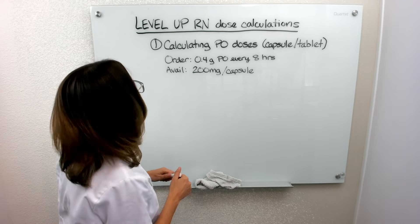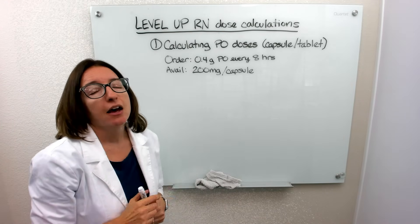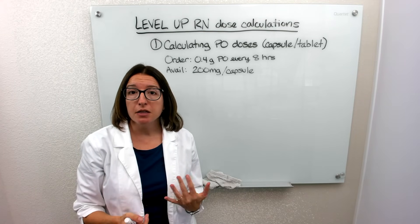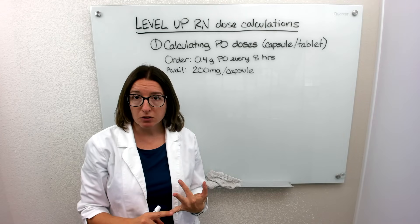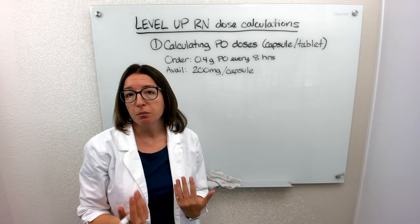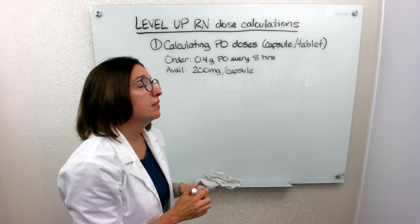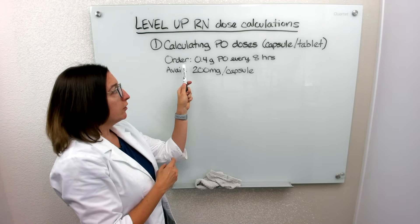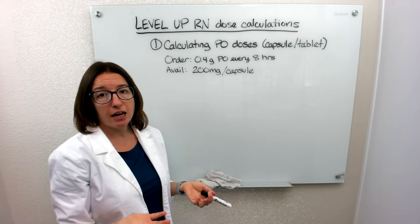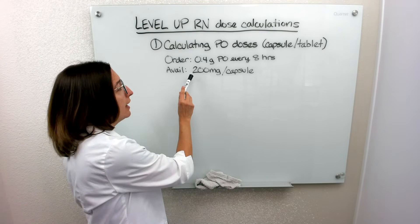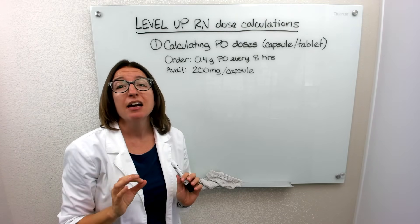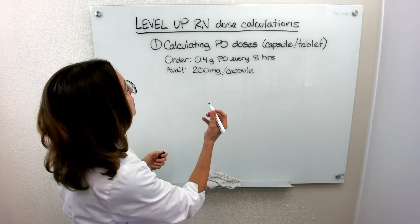The first problem I'm going to go over is how to calculate an oral dose. If your doctor prescribes a tablet or a capsule, how do you calculate how many tablets or capsules your patient should get? In this particular problem, the order was for 0.4 grams of this medication every eight hours, and what we have on hand are capsules with 200 milligrams in each capsule.